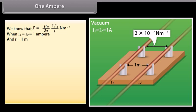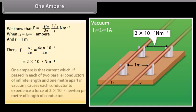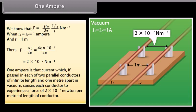One ampere is defined using F upon L equal to mu_0 upon 2 pi multiplied by I1 I2 upon R. When I1 equals I2 equals 1 Ampere and R equals 1 metre, F equals 2 × 10⁻⁷ newton per metre. Therefore, 1 Ampere is that current which, if passed in each of two parallel conductors of infinite length and 1 metre apart in vacuum, causes each conductor to experience a force of 2 × 10⁻⁷ newton per metre of length.